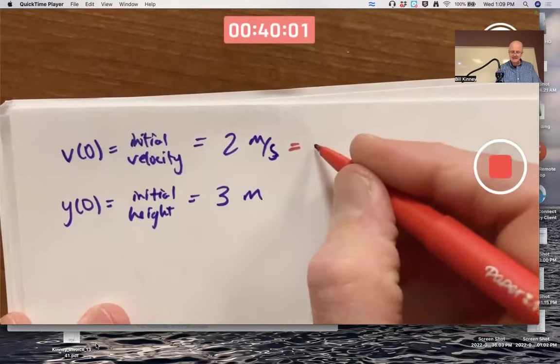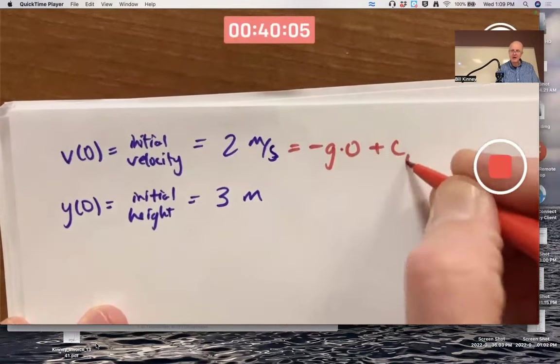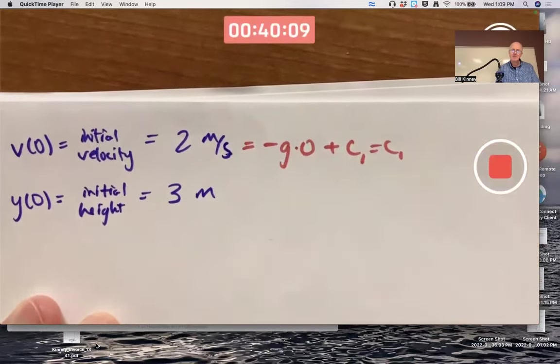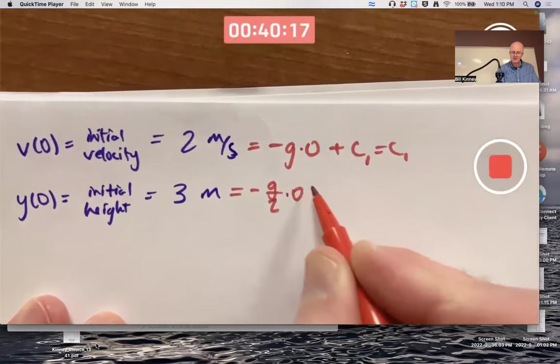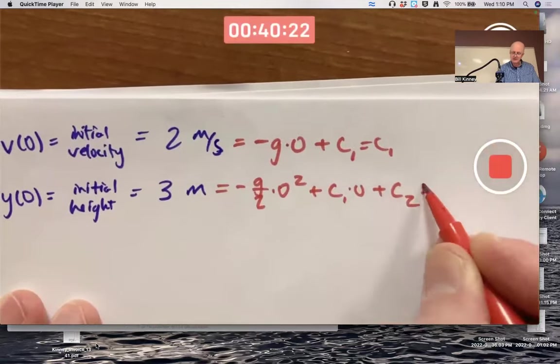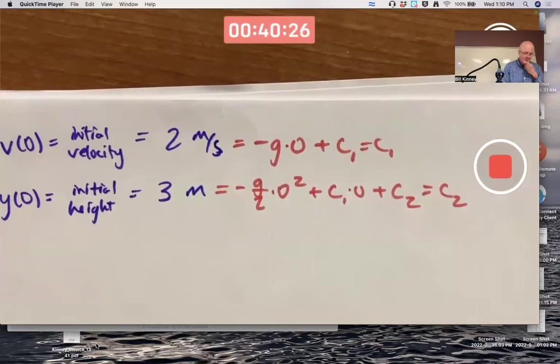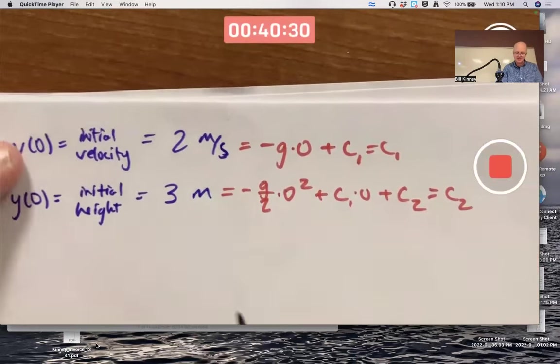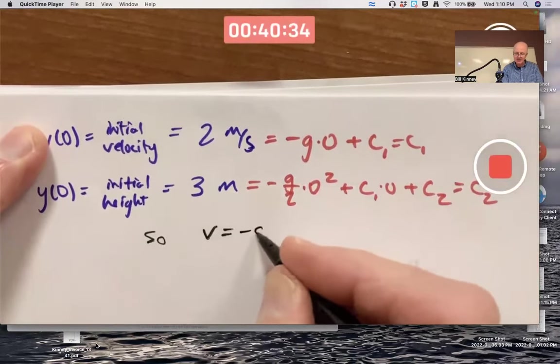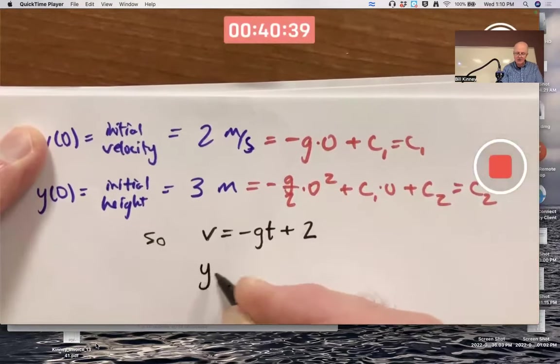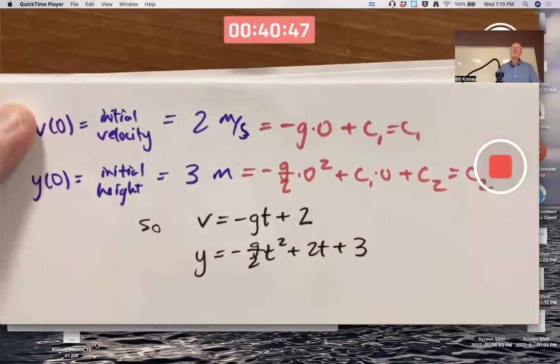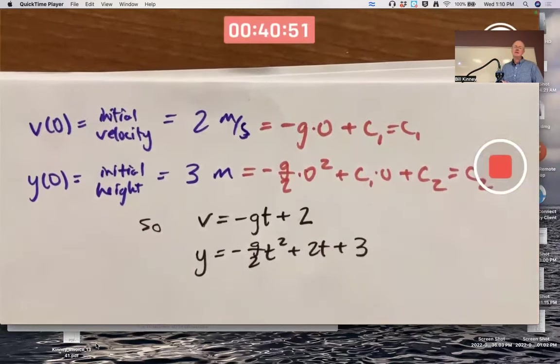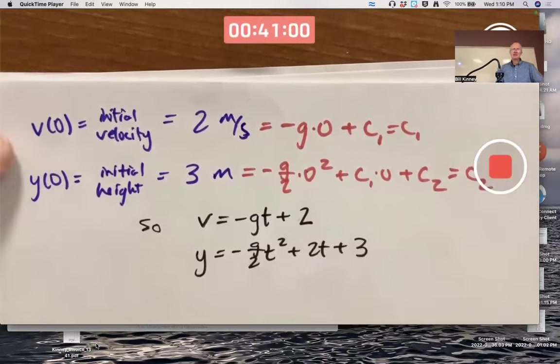I can use these values to find the C1 and the C2. That's the initial velocity. This is negative G times 0 plus C1, which is C1. Using the velocity equation. This is the initial height. This is negative G over 2 times 0 squared plus C1 times 0 plus C2, which is just C2. So, based on these initial conditions, the actual velocity is negative Gt plus 2. And the actual height is Y equals negative G over 2t squared plus 2t plus 3.